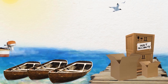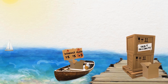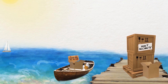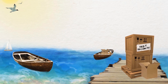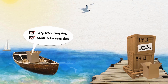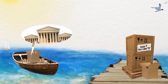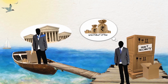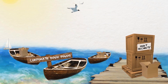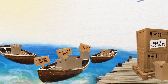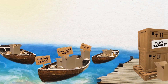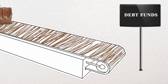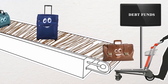Floating rate funds regularly adjust the interest rate they pay to reflect the market rate. These funds invest mostly in floating rate debt instruments and are best for investing during a rising interest rate regime. Government security funds invest only in short-term or long-term government securities issued by either the central or state government, giving retail investors access to government securities otherwise available only to high-value investors. Corporate bond funds invest across a variety of debt instruments typically issued by private sector, public sector, or semi-government entities.